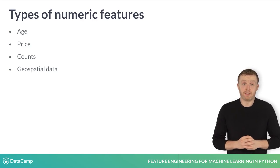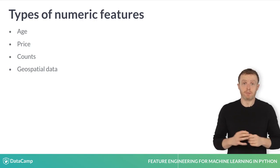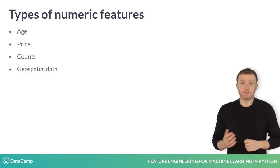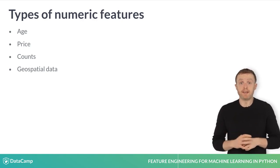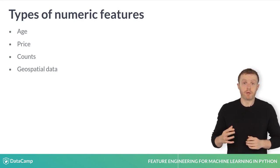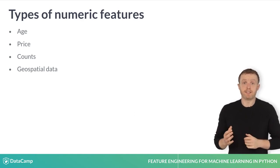Pretty much anything that can be quantitatively measured can be recorded as numeric data — for example, age, the price of an item, counts, and even spatial data such as coordinates. Depending on the use case, numeric features can be treated in several different ways. We will work through a few of the considerations and possible feature engineering steps to keep in mind when dealing with numeric data.